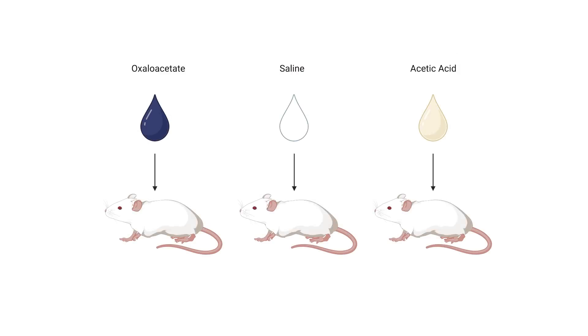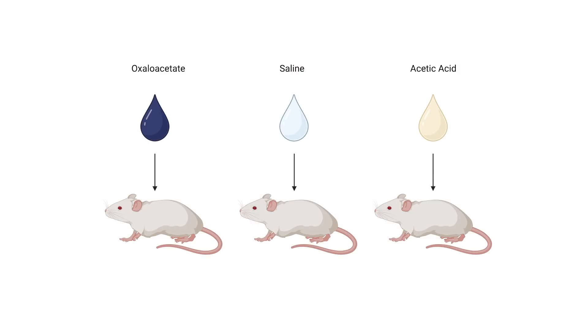The researchers of this study performed a number of experiments. For one, they injected mice in the breast tissue with one of three substances: one, oxalates; two, saline, known as the control; and three, acetic acid, another control, because they thought it might be possible that cancer might arise from a change in pH.